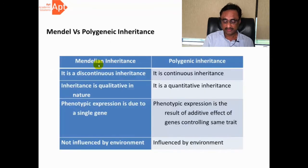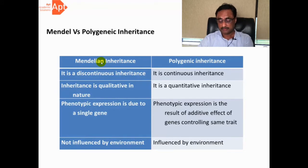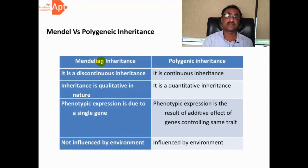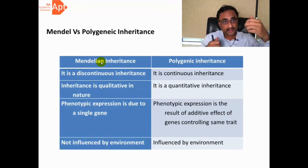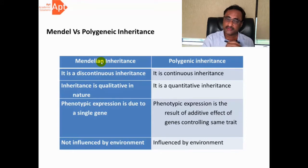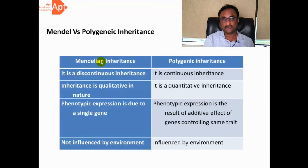Let's see what polygene is and how it is different from Mendel. The very first thing: Mendelian inheritance is a discontinuous inheritance. Why? Because if you take a trait like tall and dwarf, Mendel visualized only two things — either the plant can be tall or the plant can be dwarf. He didn't visualize anything in between tall and dwarf. But polygenic inheritance visualizes the conditions that exist between tall and dwarf. That's why it is different.